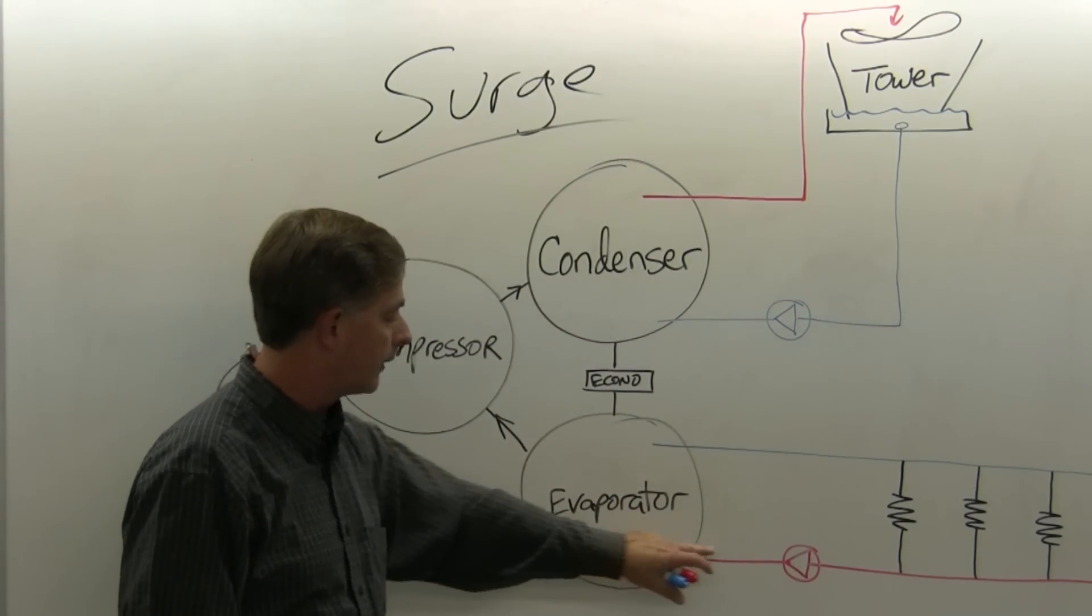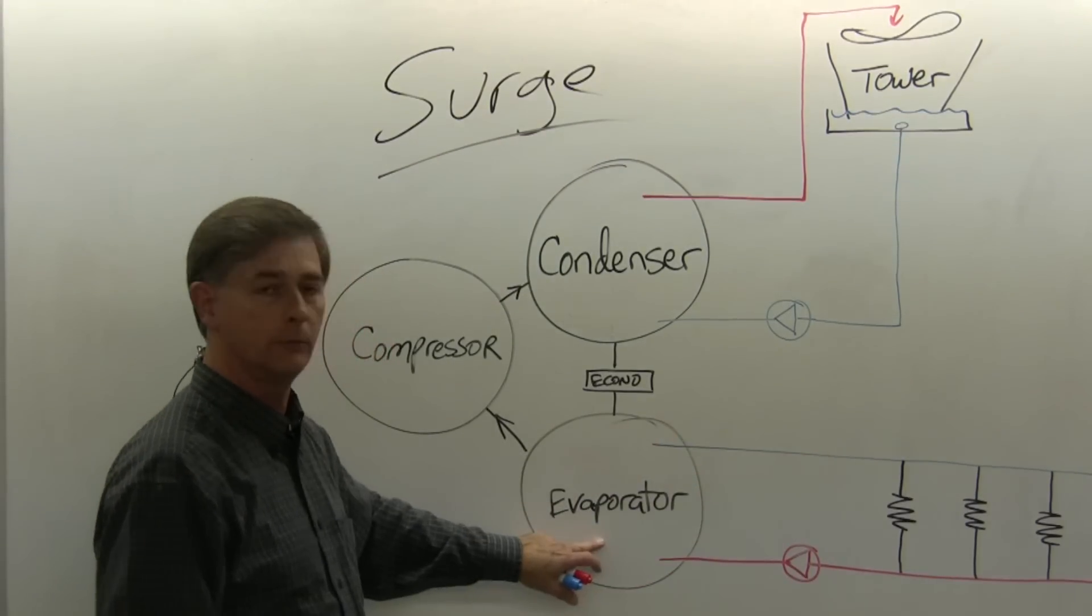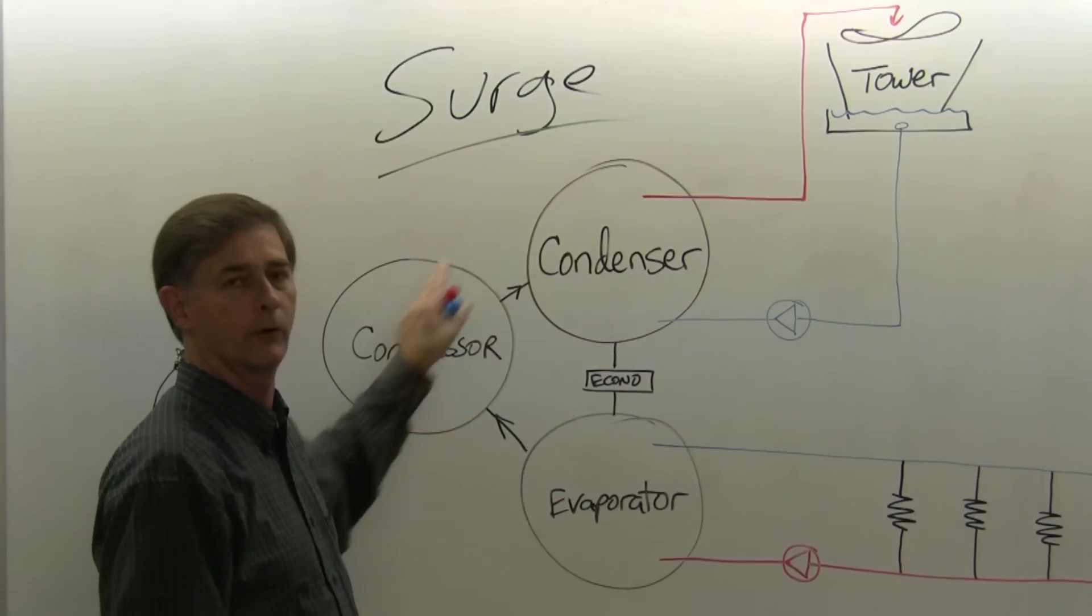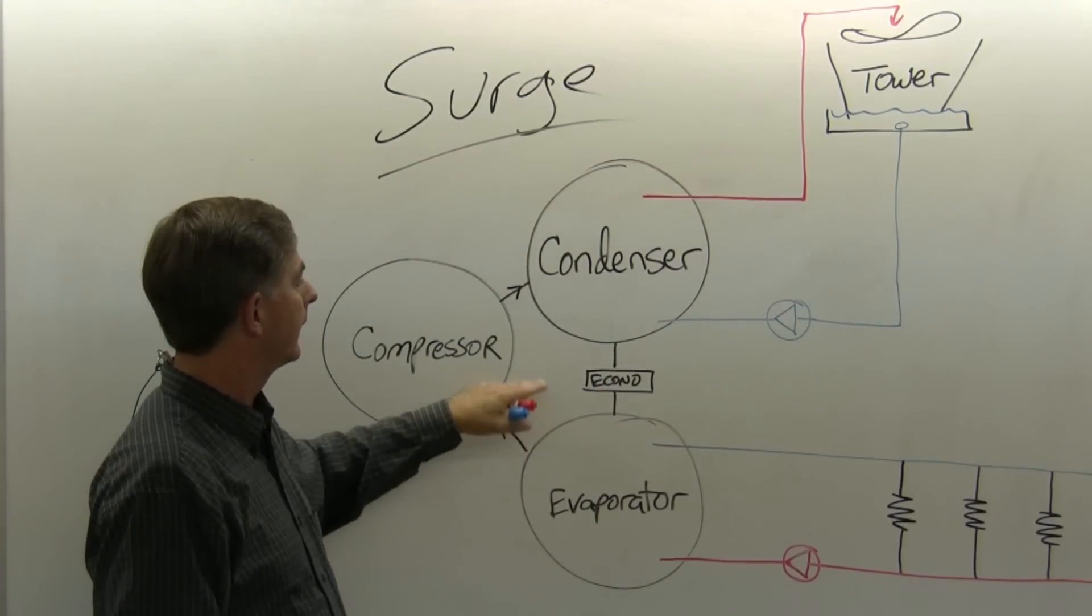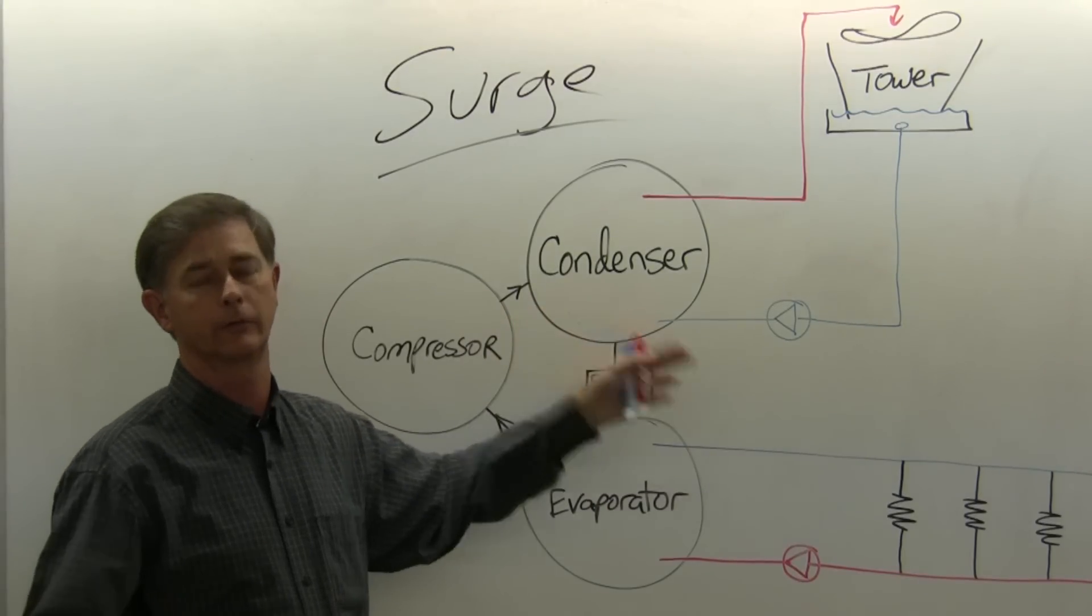And the evaporator mixes with the heat from our chilled water loop, boils off the refrigerant, sends it to the compressor, condenser, and that is our refrigeration cycle in respect to a low pressure centrifugal chiller.